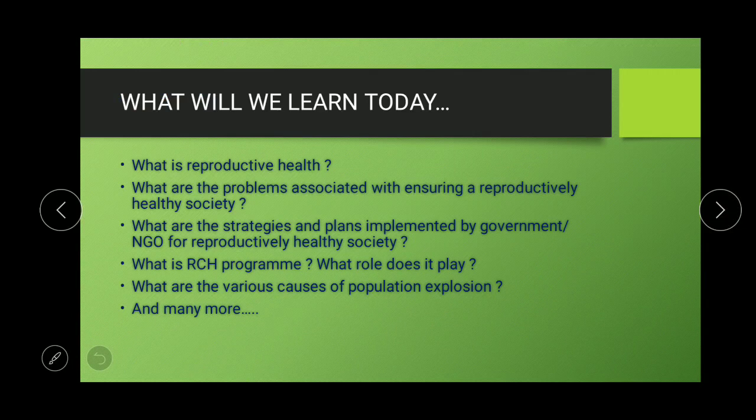First of all, what we will learn today: we will see what is reproductive health, then what are the problems associated with ensuring a reproductively healthy society — that is, a society should be healthy in terms of social, economical, and reproductive attributes. Then we will see what strategies and plans are implemented by our government — both central and state — and NGOs. Then we will see what is the RCH program and its role in rural and urban areas. And what are the various causes of population explosion.